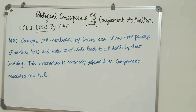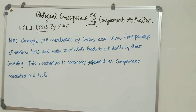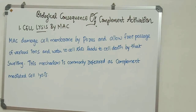MAC, the Membrane Attack Complex, causes cell membrane damage by making pores on the cell membrane. Through these pores, it allows free passage of various ions and water into the cell. The resulting swelling leads to cell death. This is commonly known as complement-mediated cell lysis.